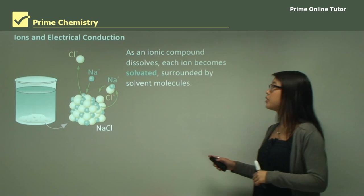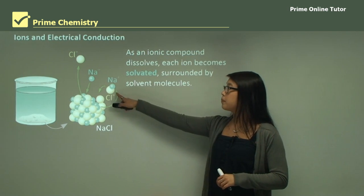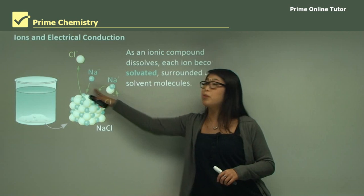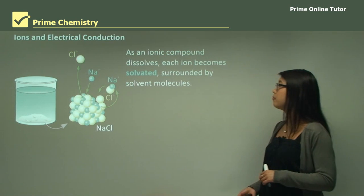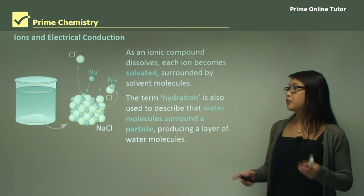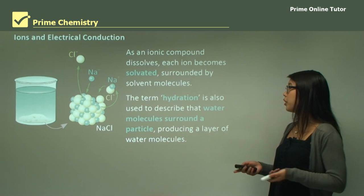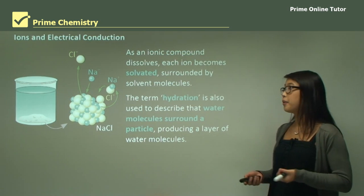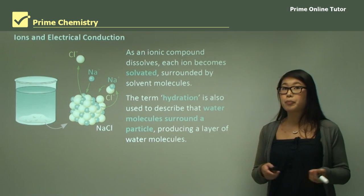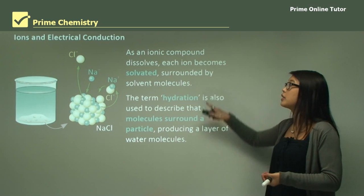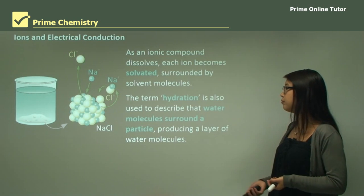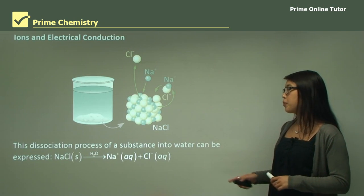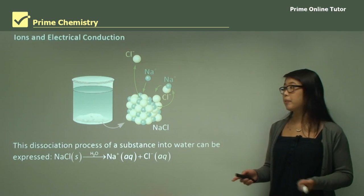When an ionic compound dissolves in water, each ion becomes solvated — water molecules surround the dissociated ion. This process is called hydration specifically in the case of water, because water molecules are surrounding each ion. If another solvent is used instead of water, we simply say the ion is solvated.